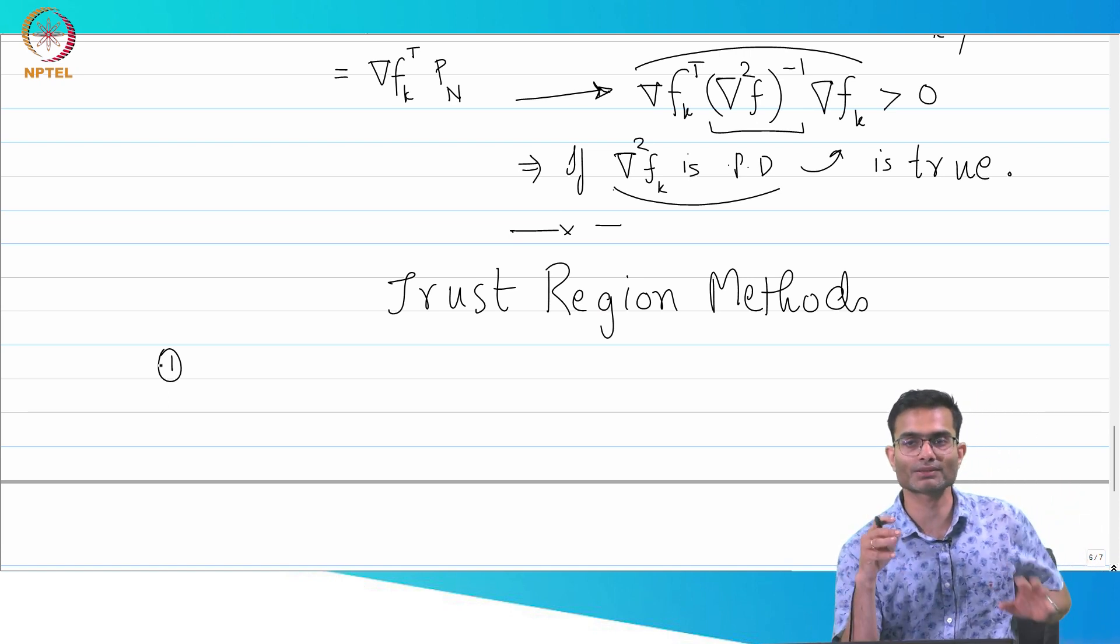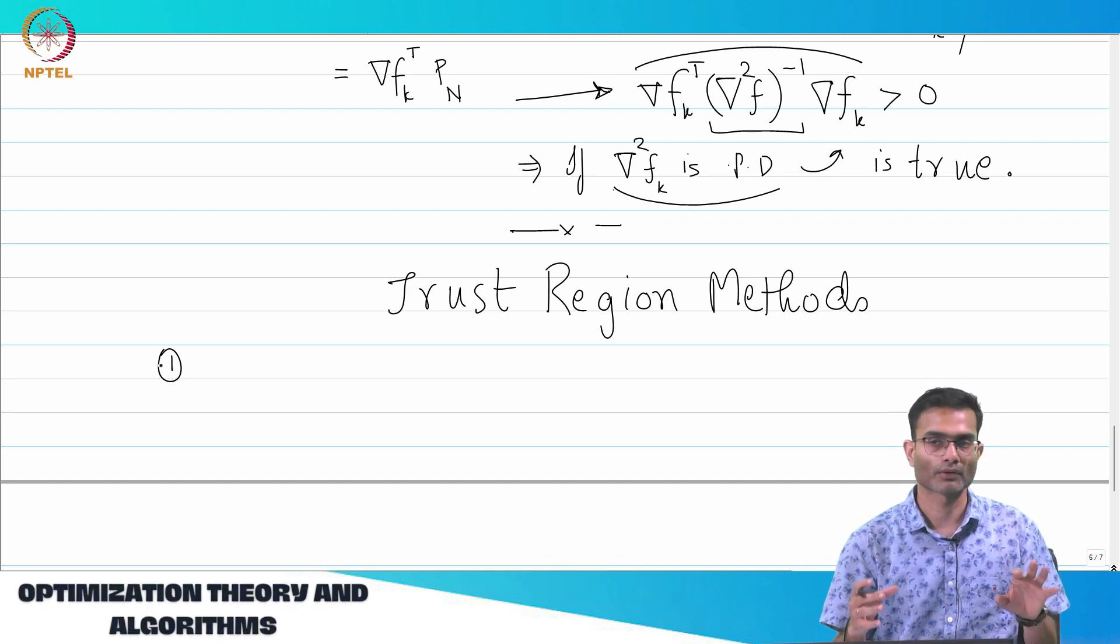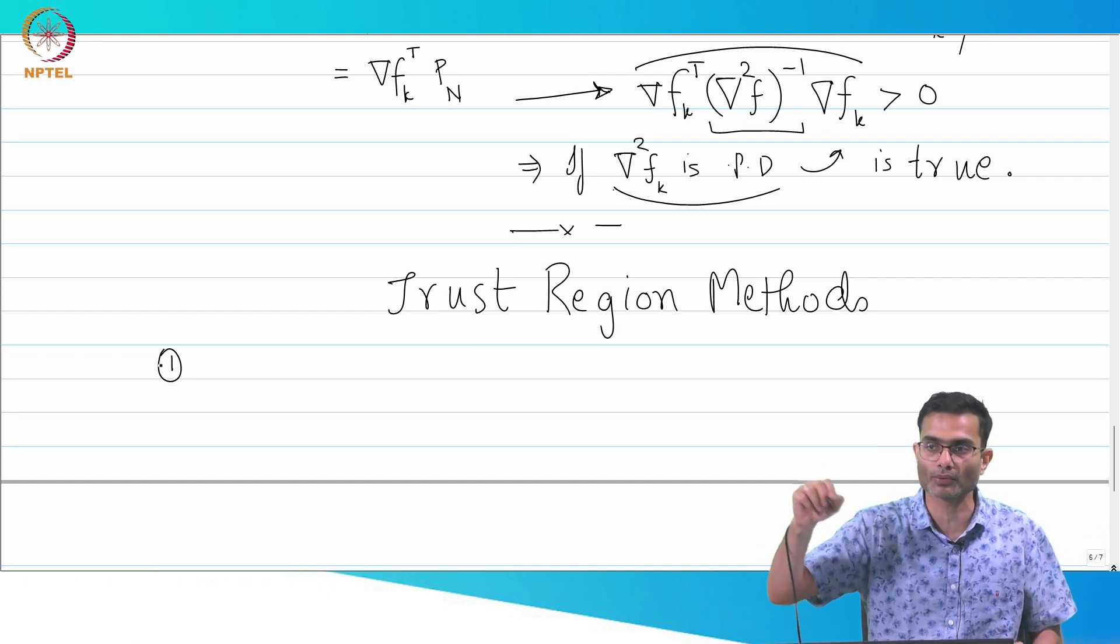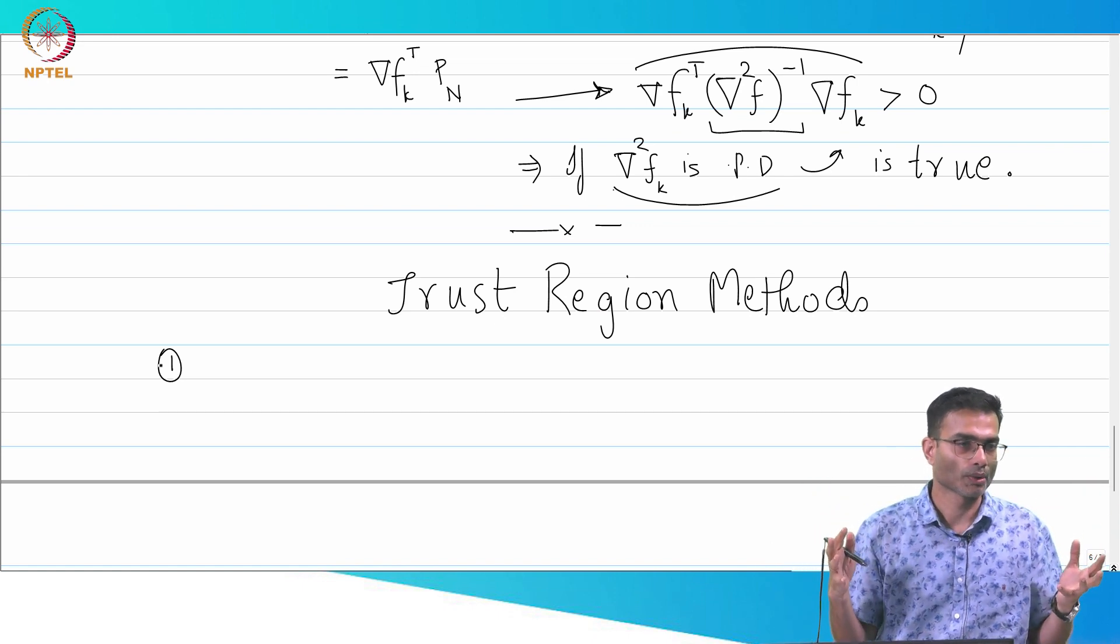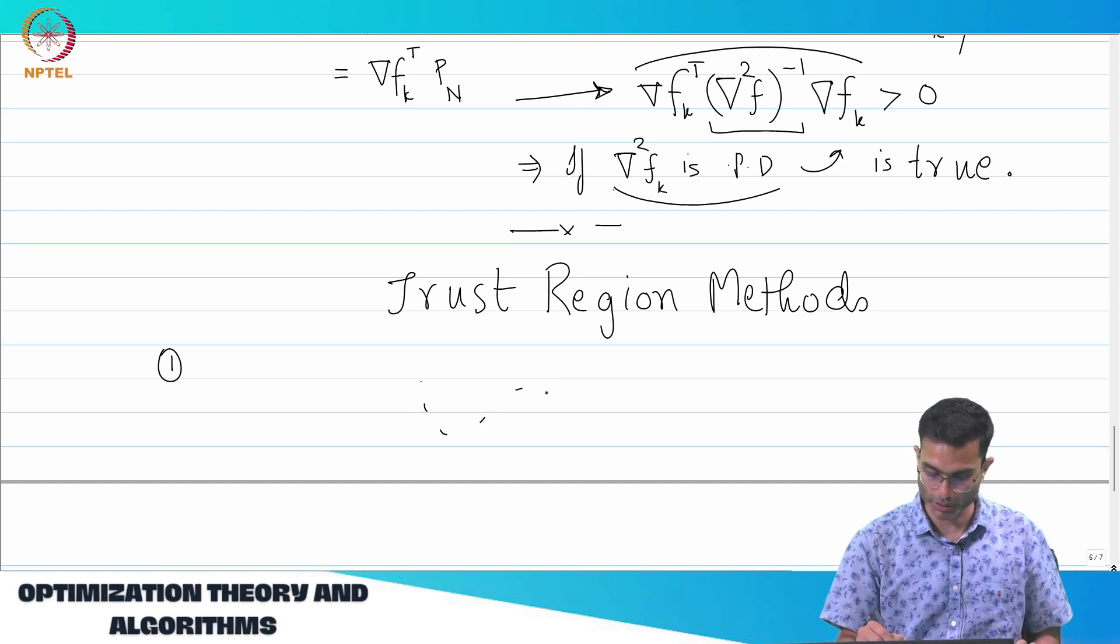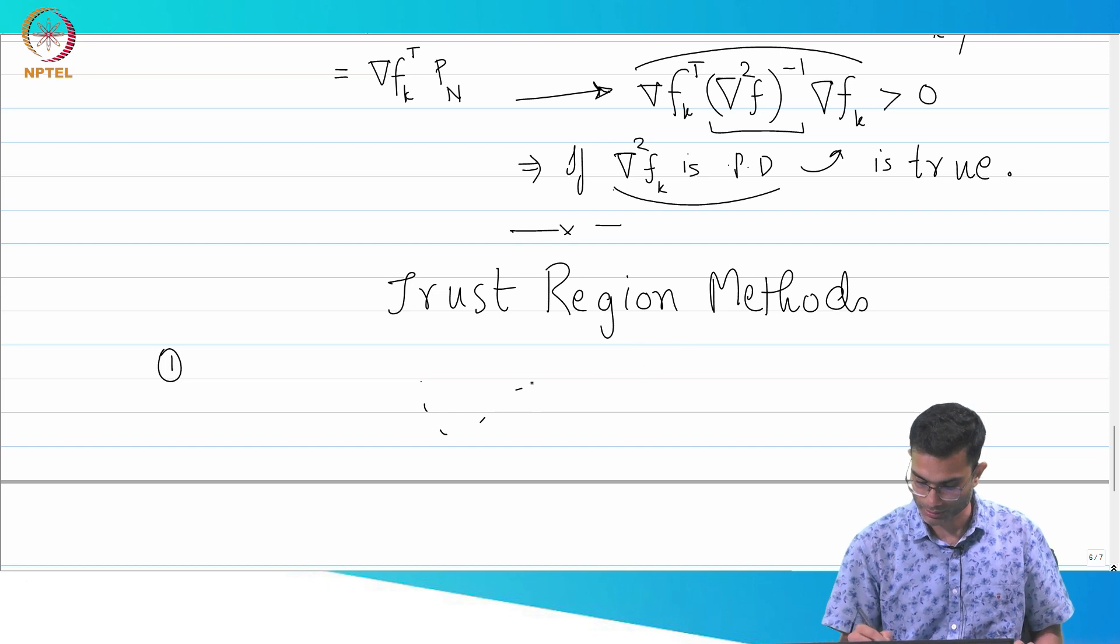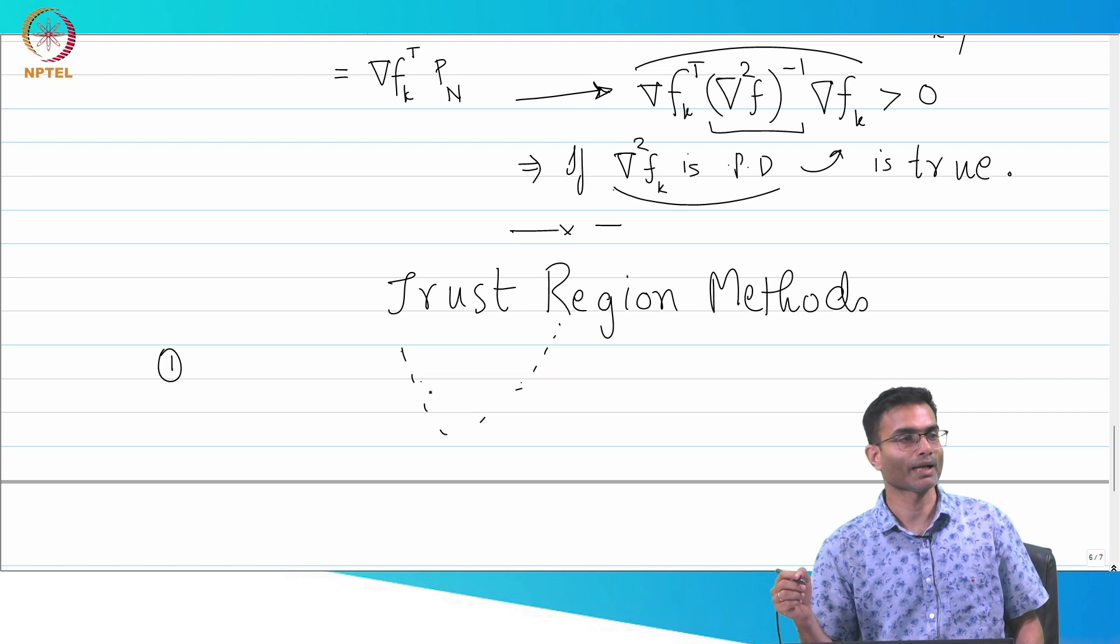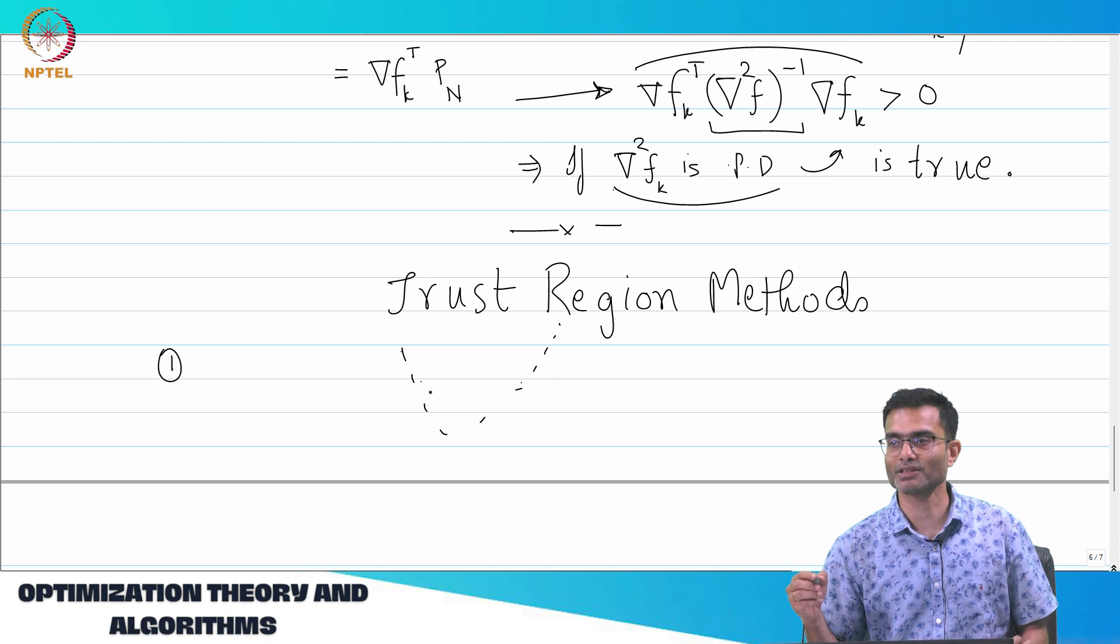The first step is I construct an approximate model of the function. So what does that mean? Let us say I have a complicated function that I cannot even write as sin, cos, and log, whatever, right? It is something that is coming from data. So supposing I give you a bunch of points, supposing I give you points like this and I say make a model out of these points, what would your first instinct be?